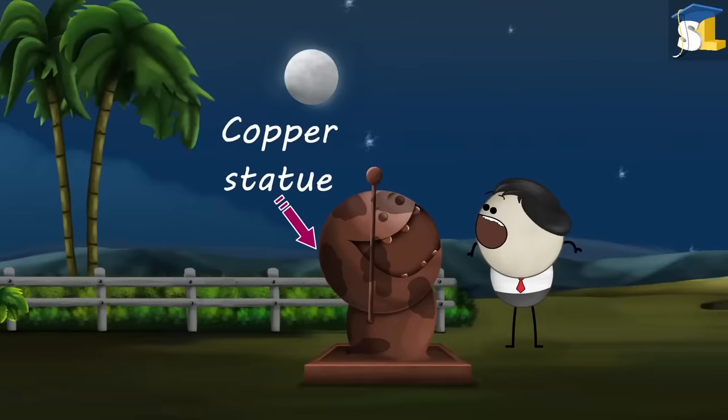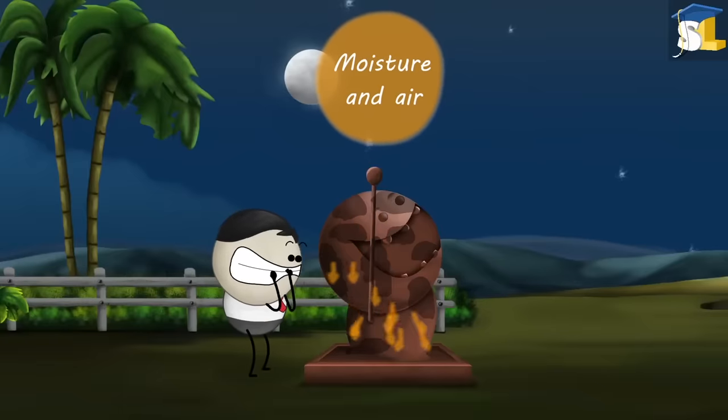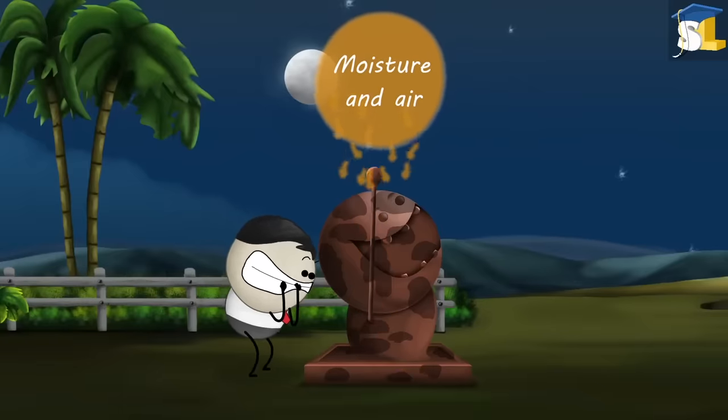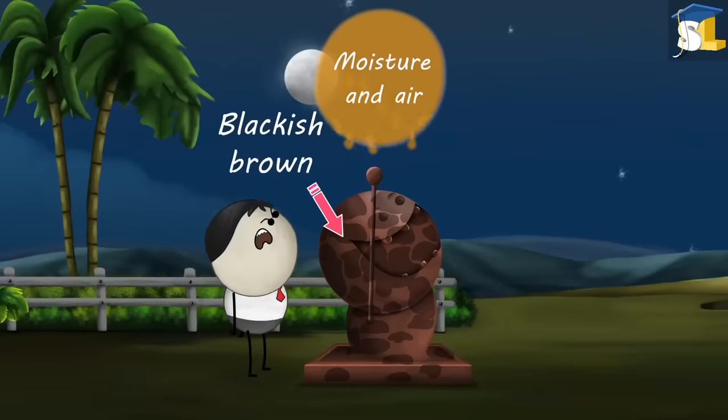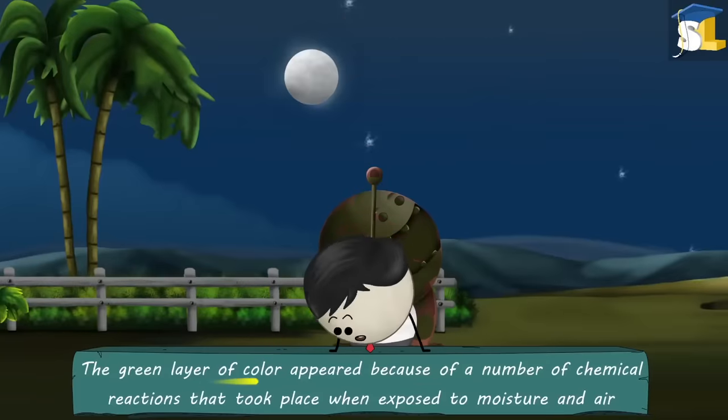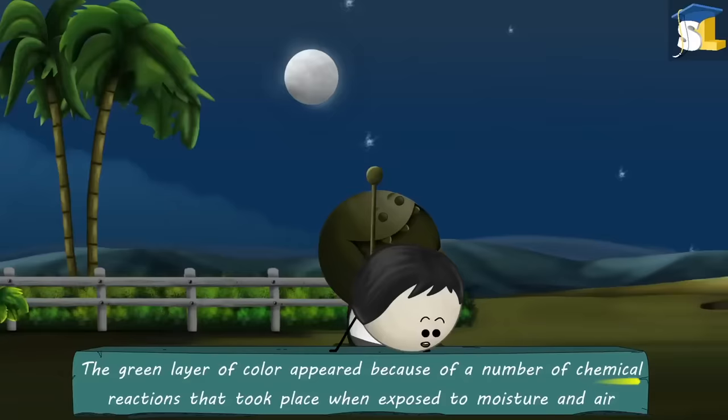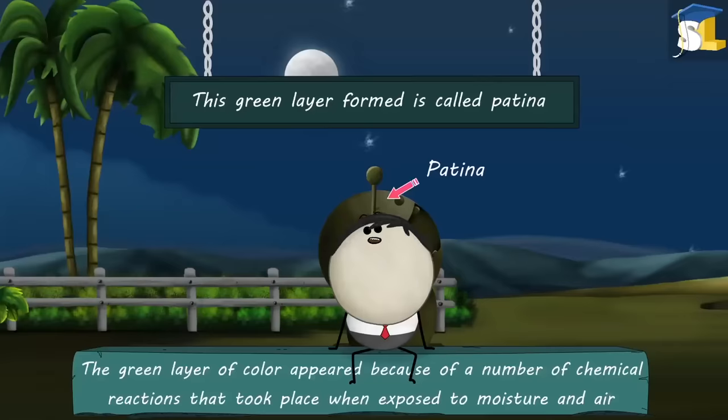When the copper statue was exposed to moisture and air for a long period of time, it started to get oxidized. In the oxidation process, its color started changing to blackish brown and then eventually into green. The green layer of color appeared because of a number of chemical reactions that took place when exposed to moisture and air. This green layer formed is called patina.